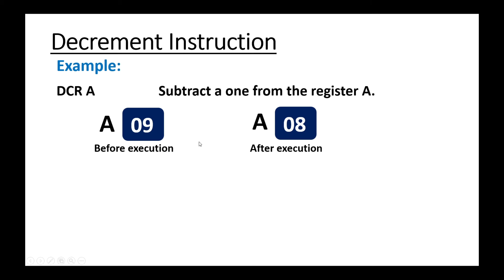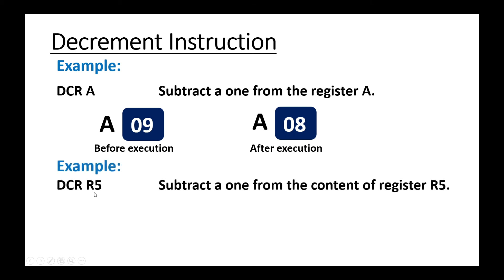Next instruction is DCR R5. R5 is the specified register — this register could be any other register between R0 to R7. It is subtracting one from the content of that register R5.